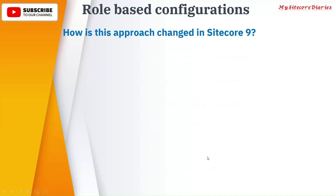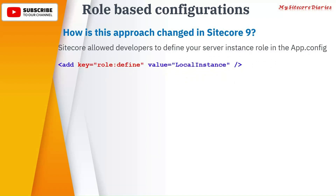Now let's see how this approach changed in Sitecore 9. In Sitecore 8 it was a manual process, but from Sitecore 9 it is configurable. Sitecore now allows developers to define the instance role directly in app.config using the key 'role:define', where you can specify whether it is a local instance, UAT instance, CM instance, CD instance, or any other role.